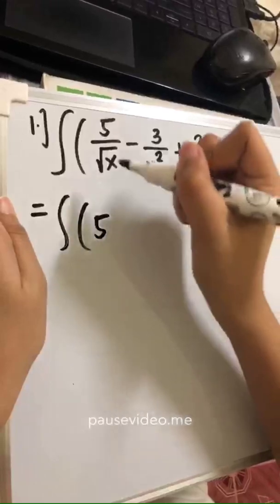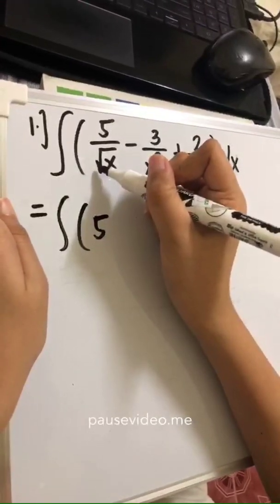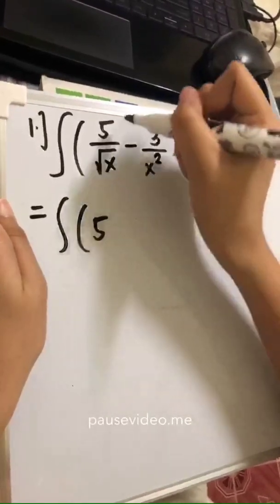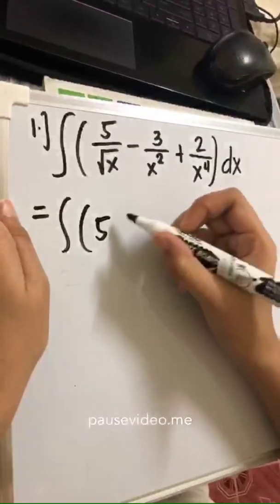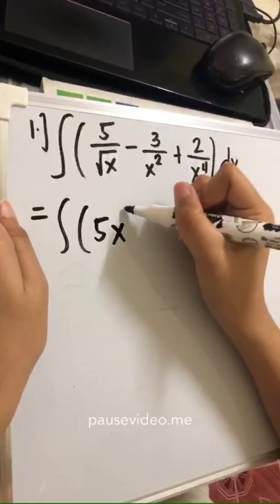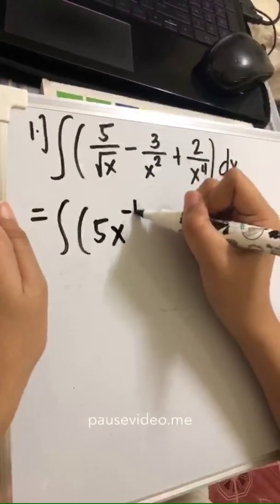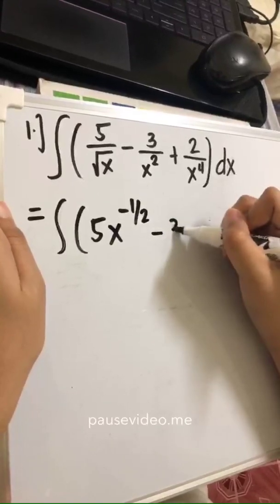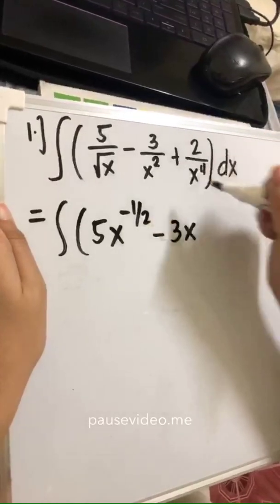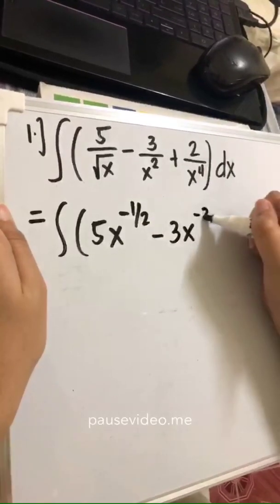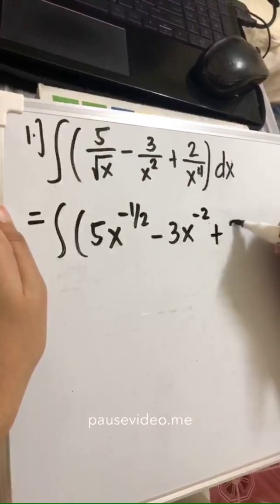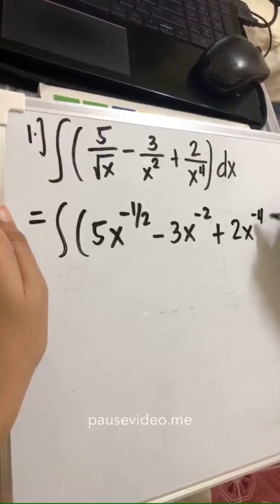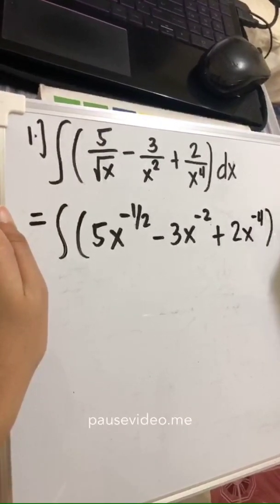So first, we'll rewrite it. 5 — since square root of x has exponent 1/2, and since we are moving this denominator to the numerator, its exponent will become negative 1/2. Then minus 3x to the negative 2, plus 2x to the negative 4, dx.